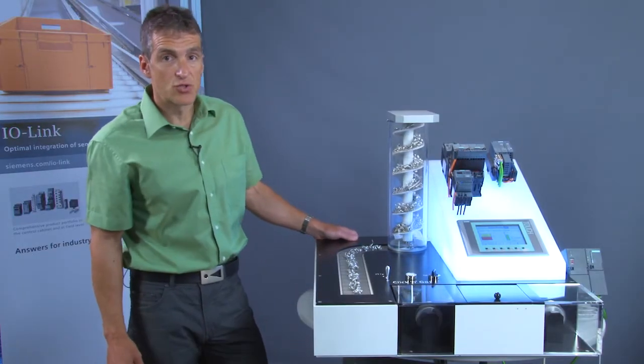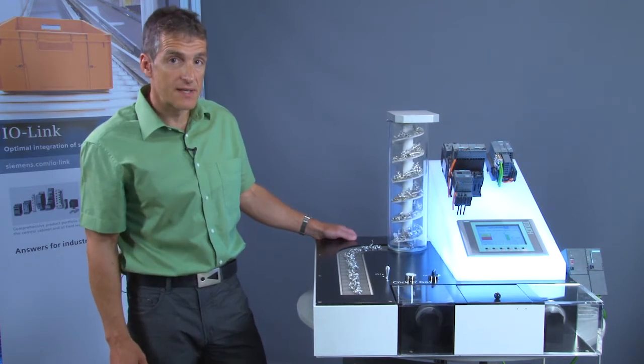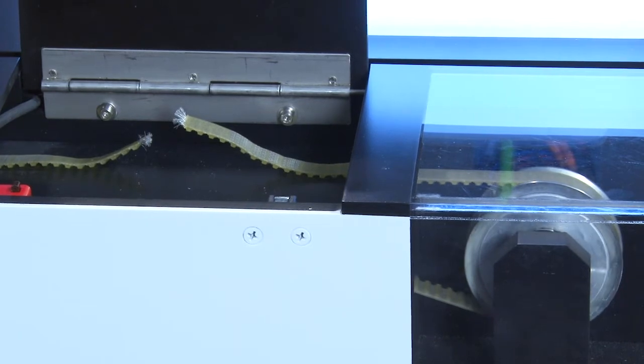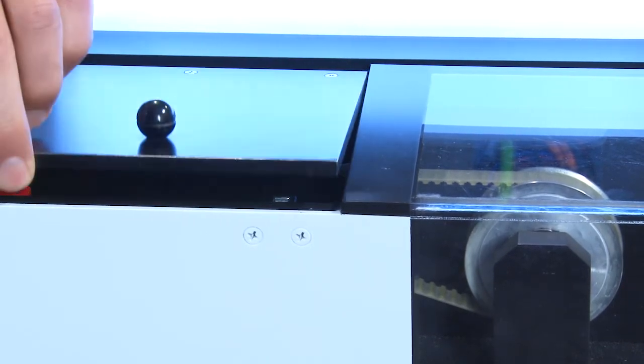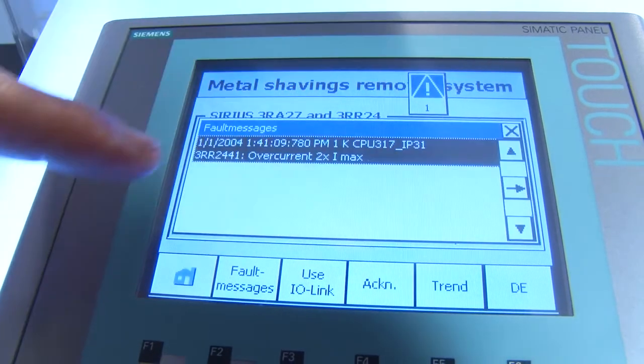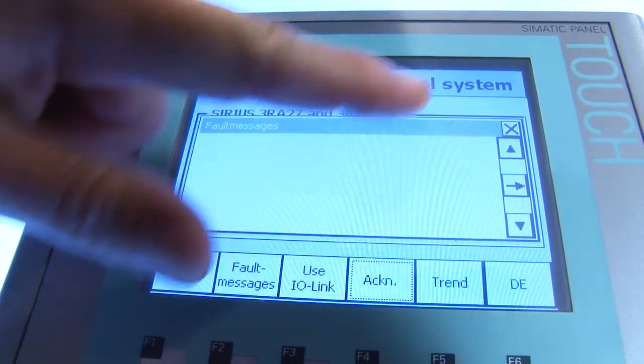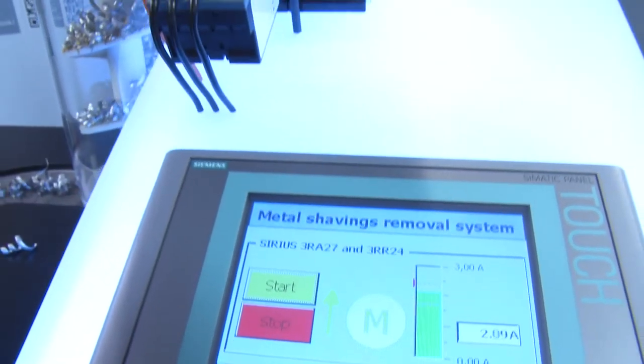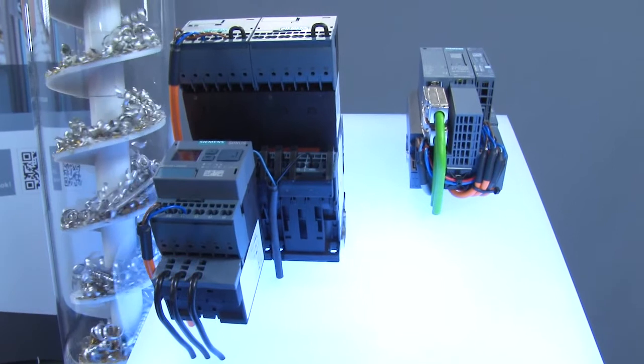If the blockade current is reached or the V-belt is torn, the shavings removal system immediately shuts down. Once the fault has been corrected, the shavings removal system resumes normal operation.